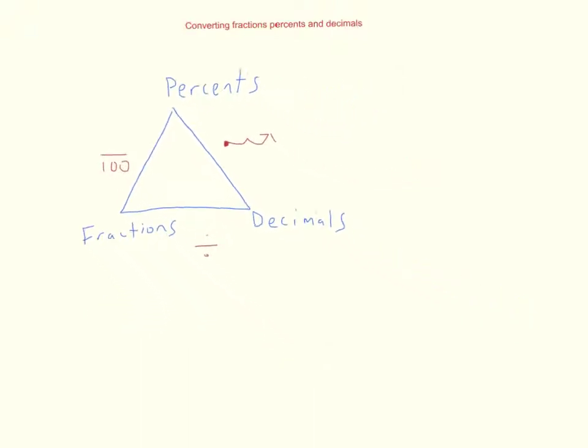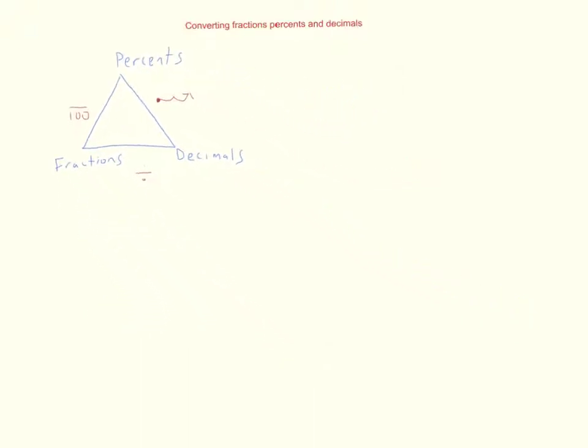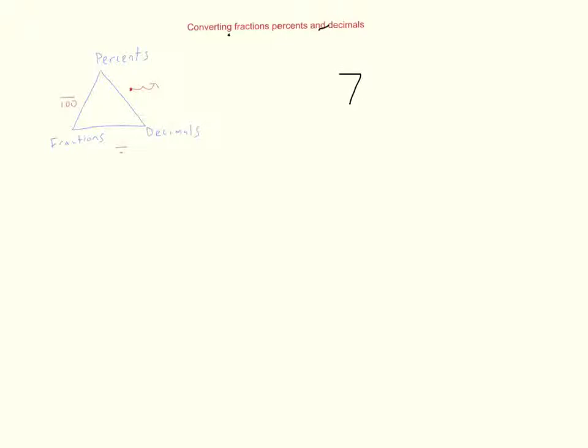So for now let's just go ahead and tuck this all up in the corner as we'll be referring to it later. Let's go ahead and do an example and we'll work our way all the way around the triangle. Let's start with 75 percent.